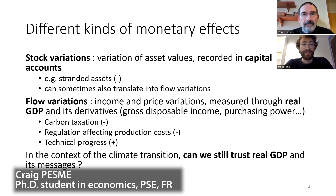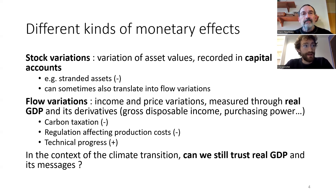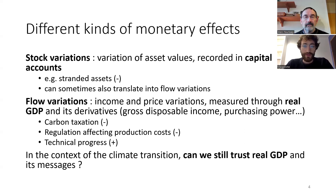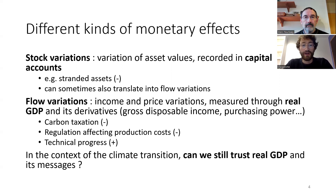Let's start with the monetary effects of the transition. We can distinguish two different kinds of monetary effects: effects on stocks and effects on flows. The stock variations are recorded in what we call capital accounts. The transition may have some negative effects on asset values. One famous example is the idea of stranded assets — the fact that some companies or even households possess assets that are polluting and that will lose value in the future because they would be too polluting to be used.